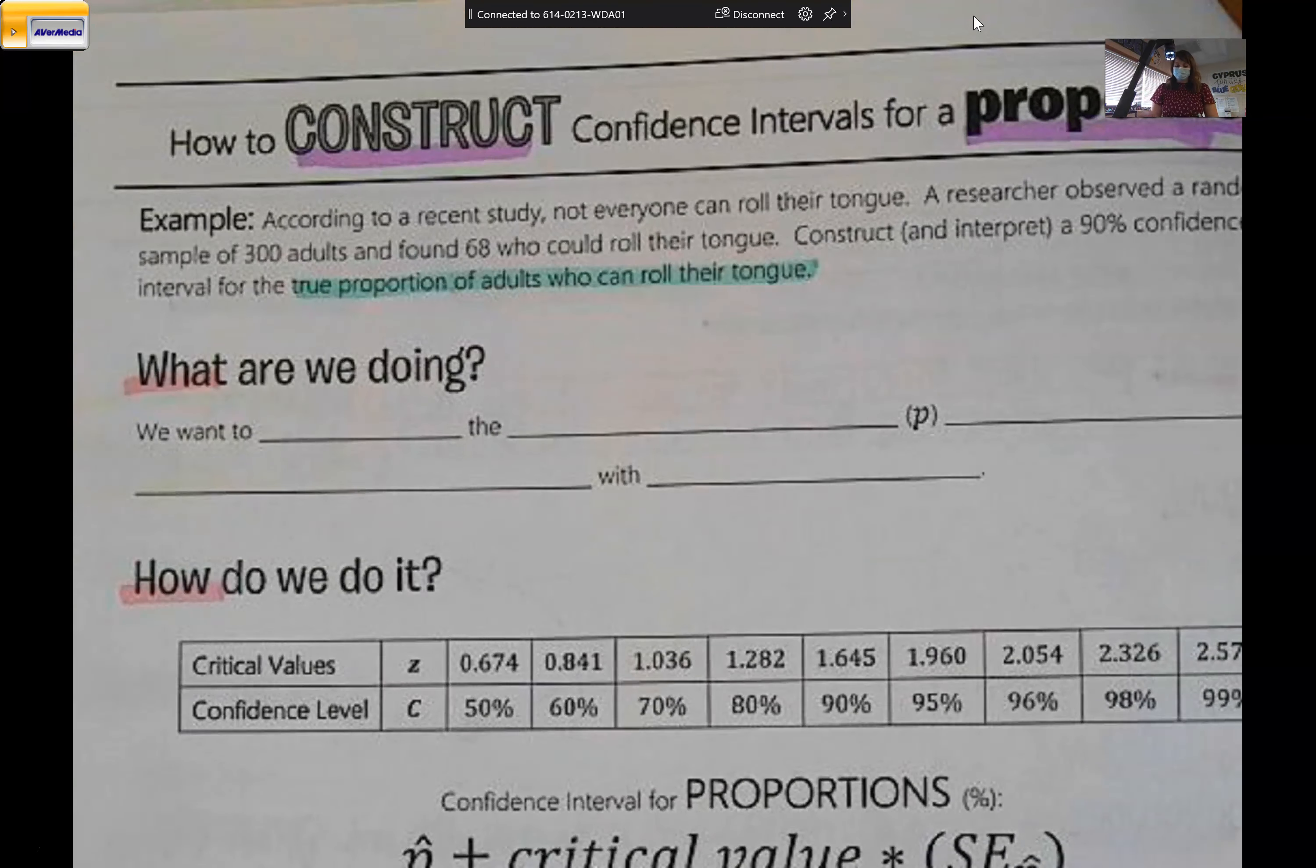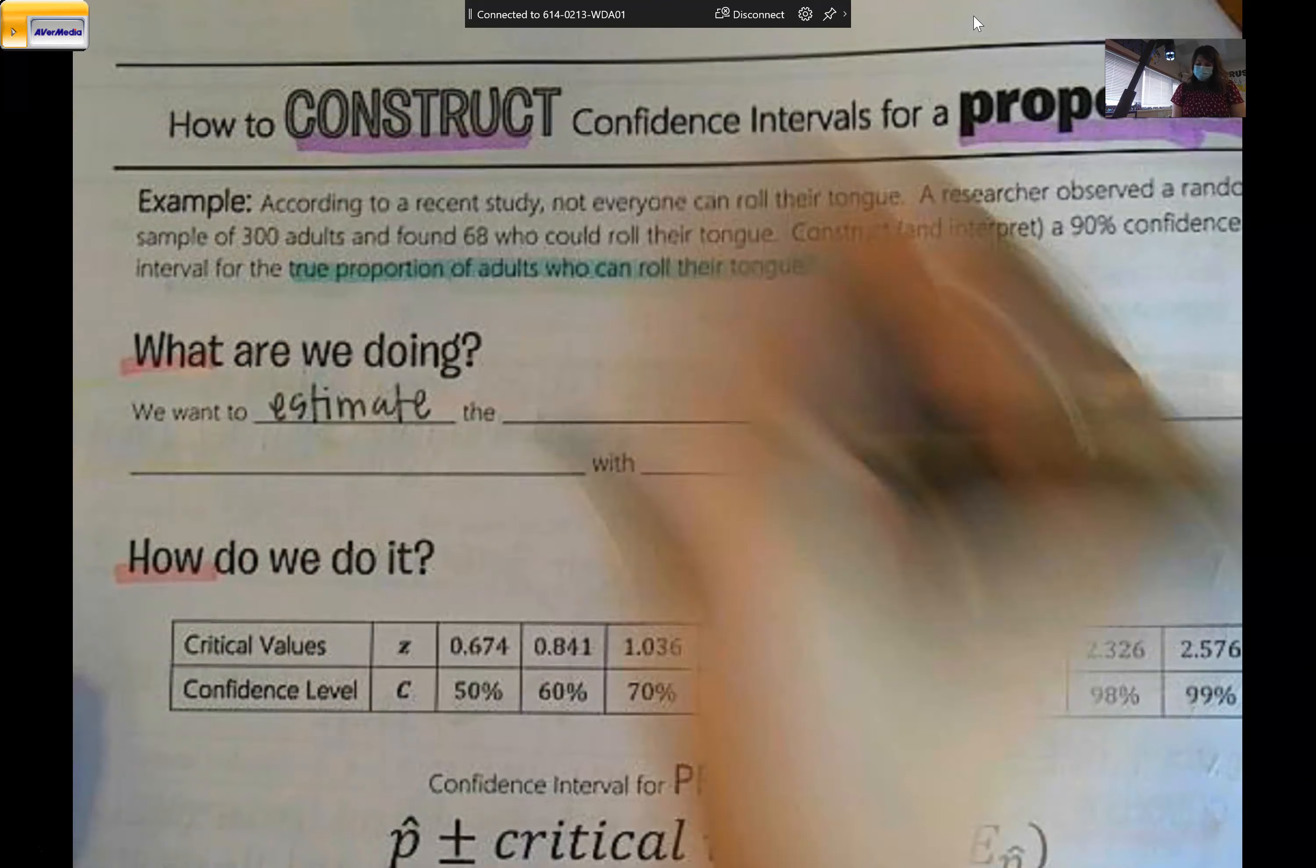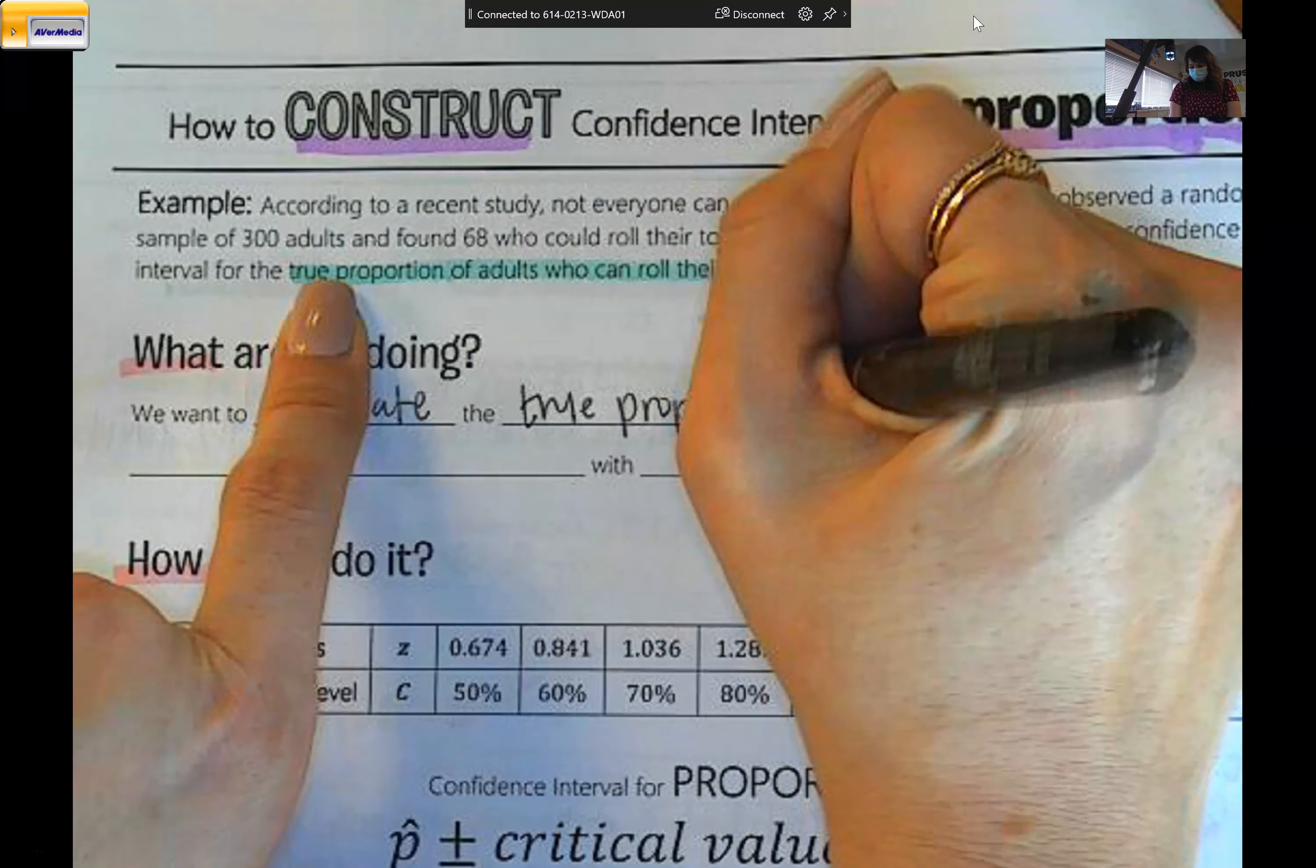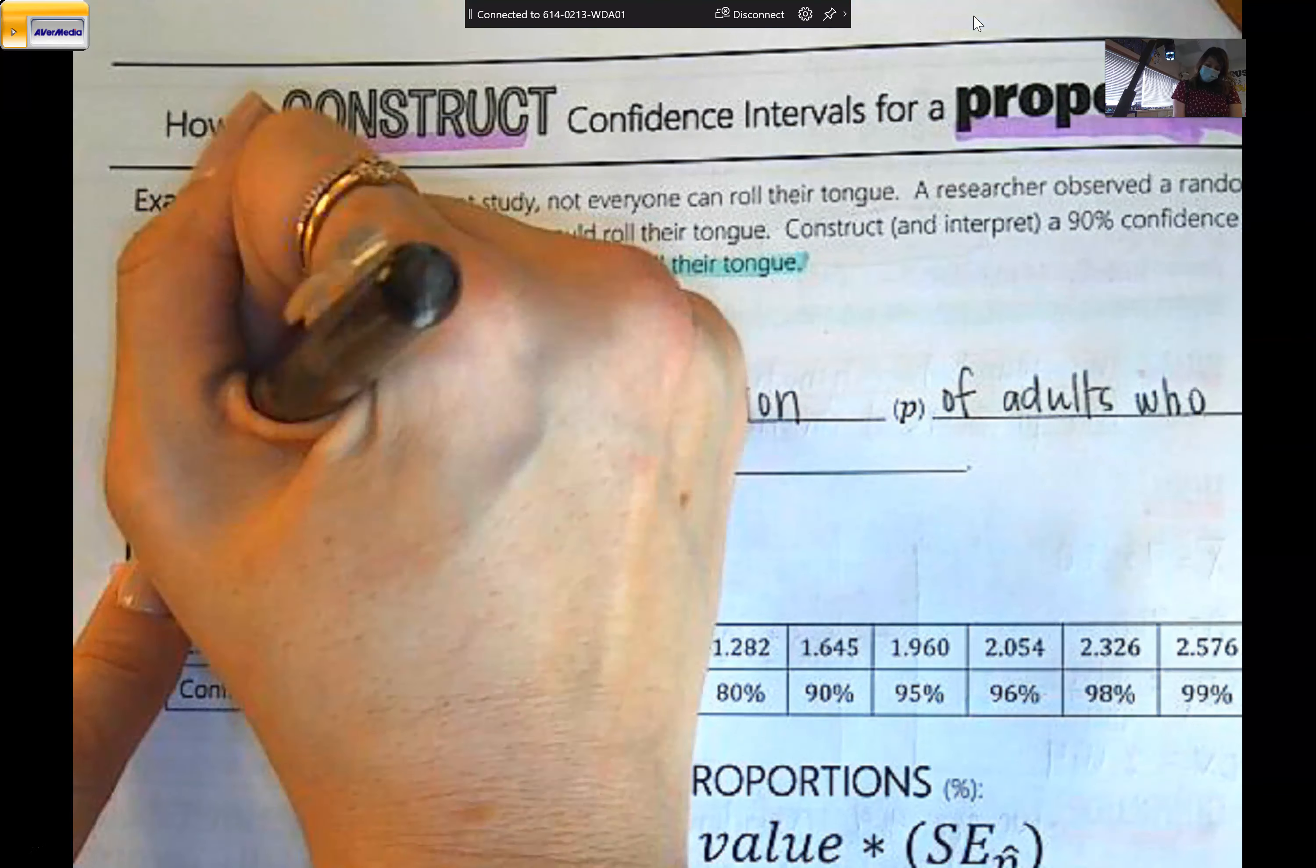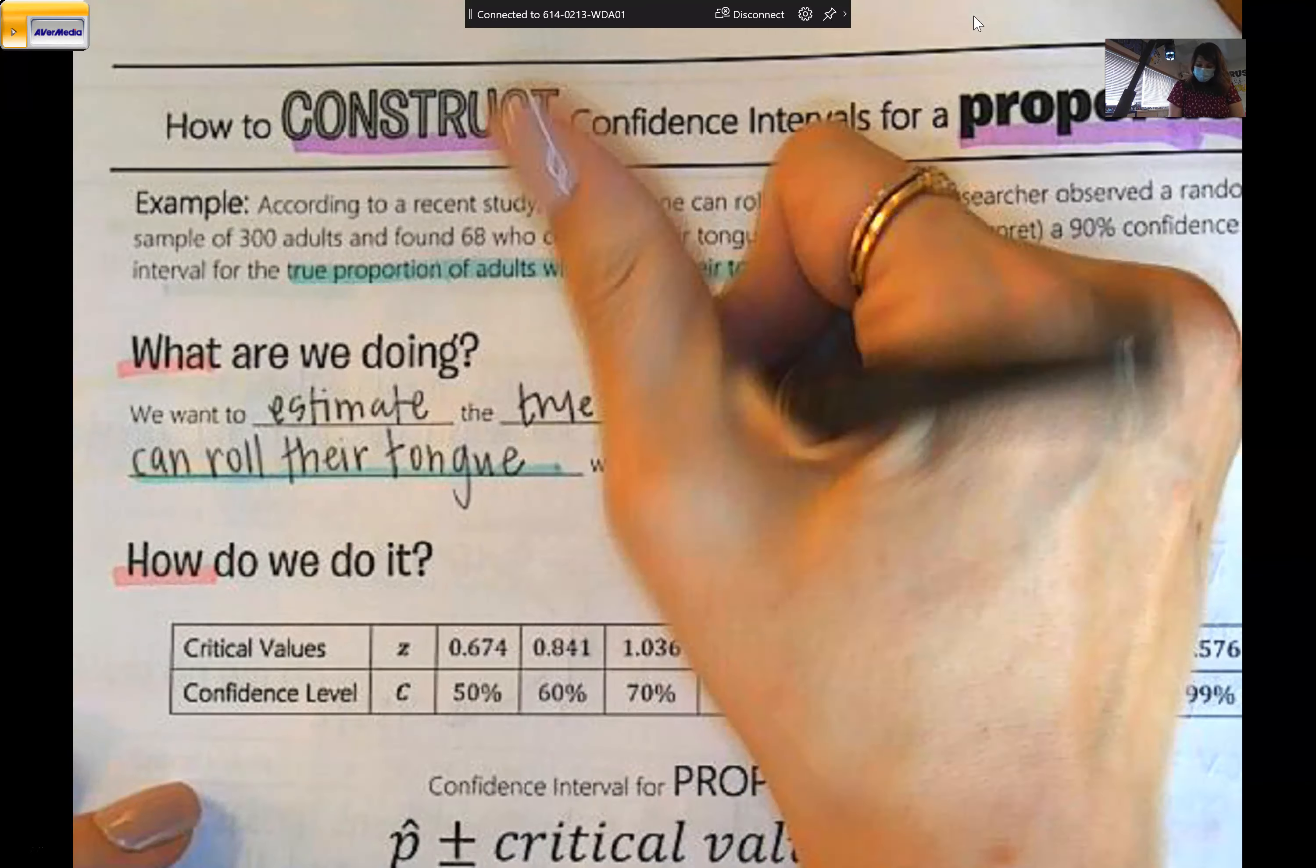So just like in all of our previous examples, we're going to use that in our sentences. This is the same as last time. So we want to estimate the true proportion, of adults who can roll their tongue, and we want to do that with 90% confidence.